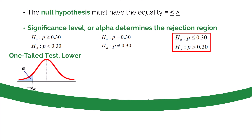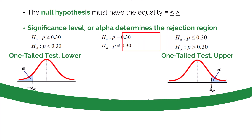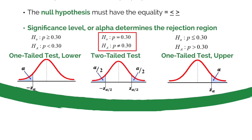On the right side, we have the null hypothesis that the population proportion is less than or equal to 0.30. This is a one-tailed upper test, and the rejection region is on the right side of the curve. Finally, in the middle, we have the null hypothesis that the population proportion equals 0.30 — this is a two-tailed test, and the rejection region is on both sides of the curve. Whenever you see an equal sign in the null, you know this is a two-tailed test.